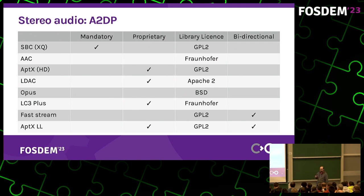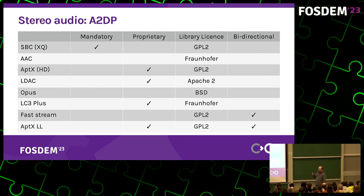In PipeWire, we use this ability to add other codecs like Opus, which is an open format, or LC3+, which is an enhanced version of the codec used in LE Audio, which we'll talk about later. Some vendors also have the ability to do bidirectional audio on A2DP with the FastStream codec, which is an evolution of the SBC codec.